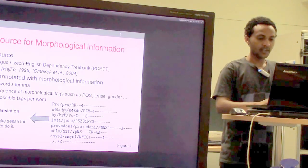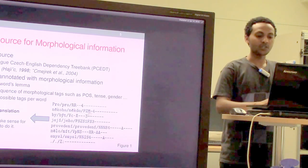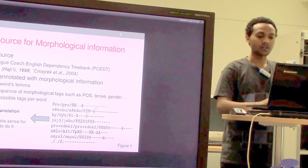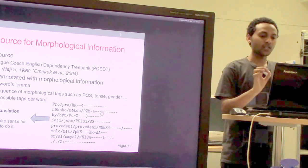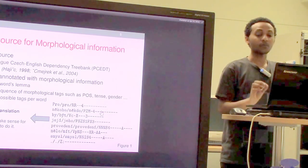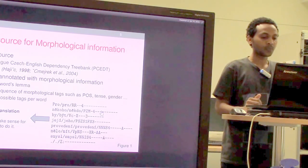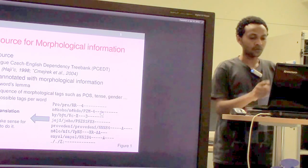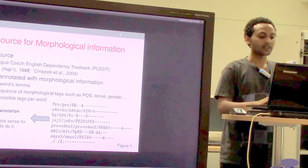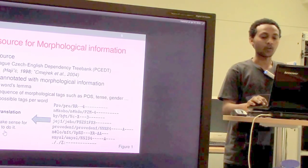An excerpt from the corpus is shown here. We have the word, the lemma, and slot positions corresponding to morphological information such as part of speech, tense, and gender. Where there is a dash, the value of that morphological tag is unspecified or doesn't apply to that specific word. The meaning of this example word in English is 'it would make sense for somebody to do it.'